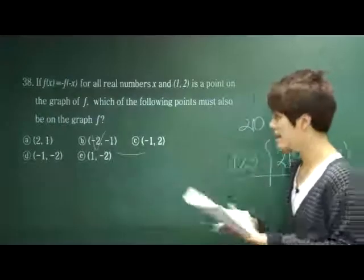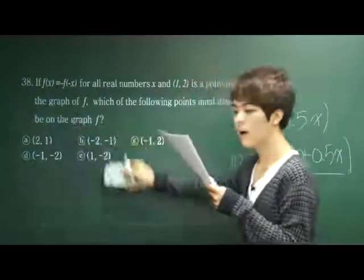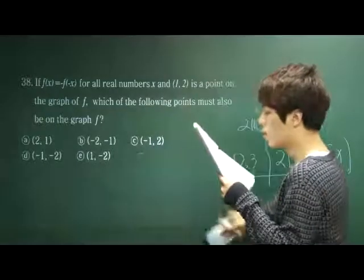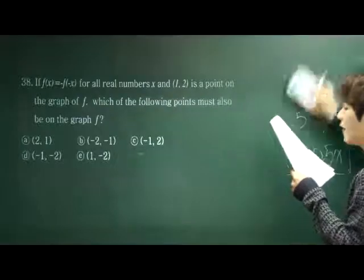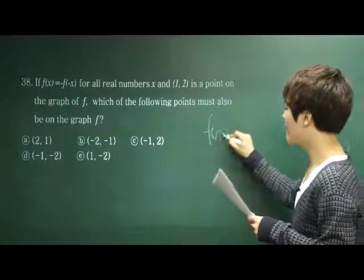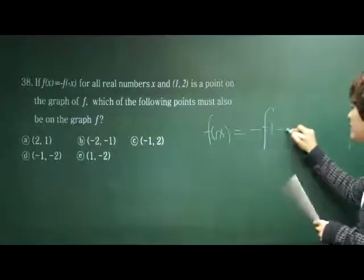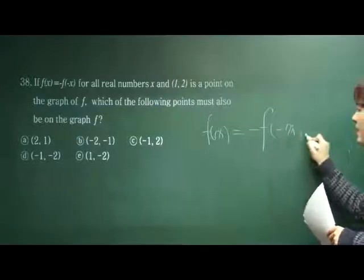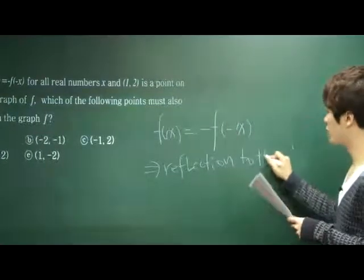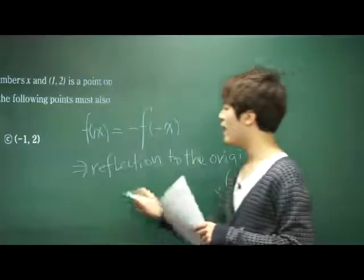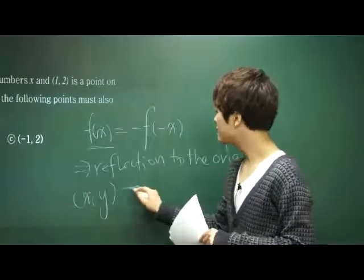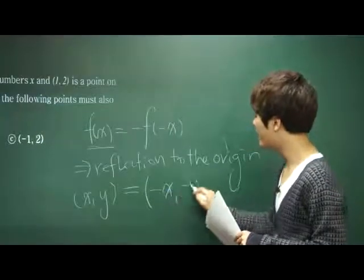Let's look at number 38. If f(x) = -f(-x) for all real numbers x, and the point (1, 2) is on the graph of f, which of the following must also be on the graph? If f(x) = -f(-x), it tells us that the function is a reflection to the origin. So if (x, y) is a value on f(x), it means that (-x, -y) will also be on the graph.